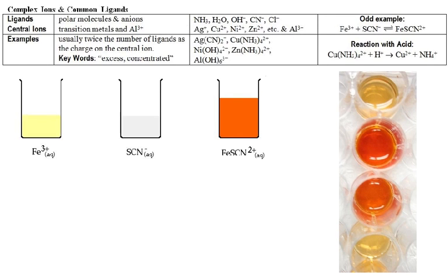One other little thing to show is there is kind of a strange example, and you should just kind of know about it, of a complex ion, and that is, if you take iron ions, which is a pale yellow color, and you mix it with thiocyanate, which is colorless,